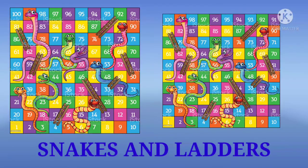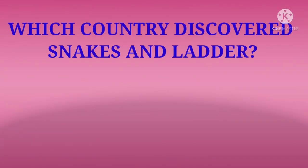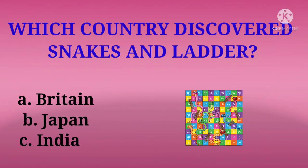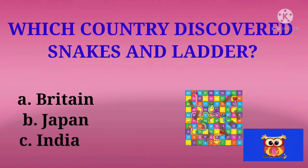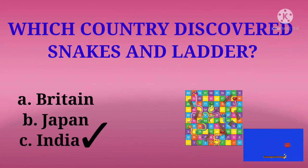Next game is Snakes and Ladders. Which country discovered Snakes and Ladders? Saanp-seedhi khel ka avishkar kis desh ne kiya hai? Options are Britain, Japan, aur India. Correct answer is India.